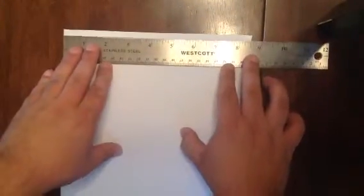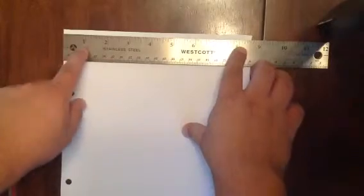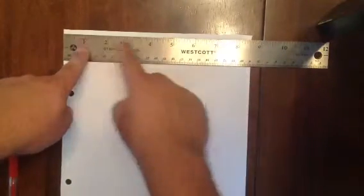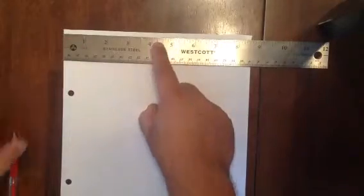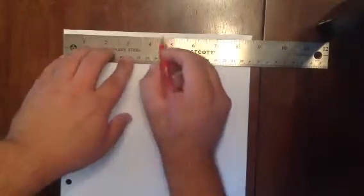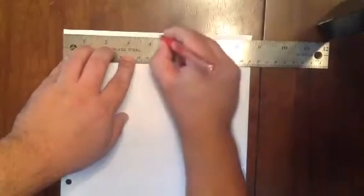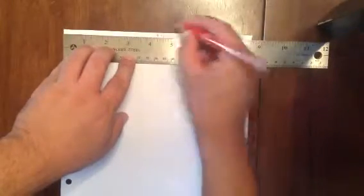Let me show you how to get the center of the page. Since it's eight and a half, half of eight would be four, and half of a half would be a quarter. So we want to go four and a quarter from one side to the other. Here's four, here's four and a half. I'm going to go about four and a quarter and make a little mark. And then same thing down on the bottom, about four and a quarter.